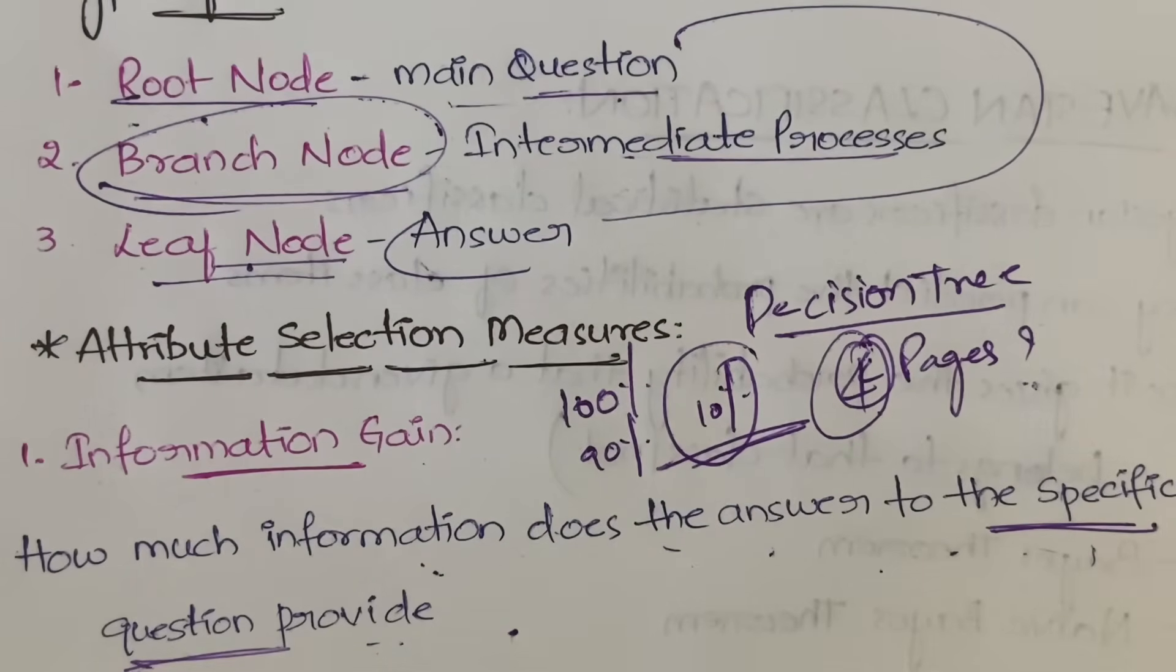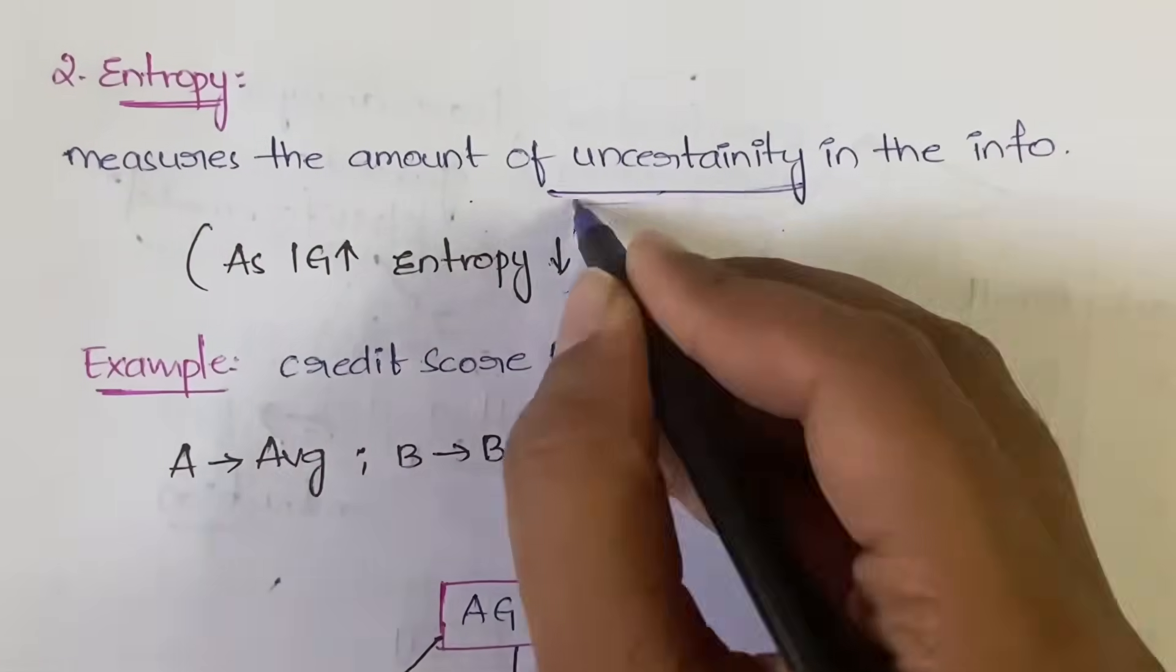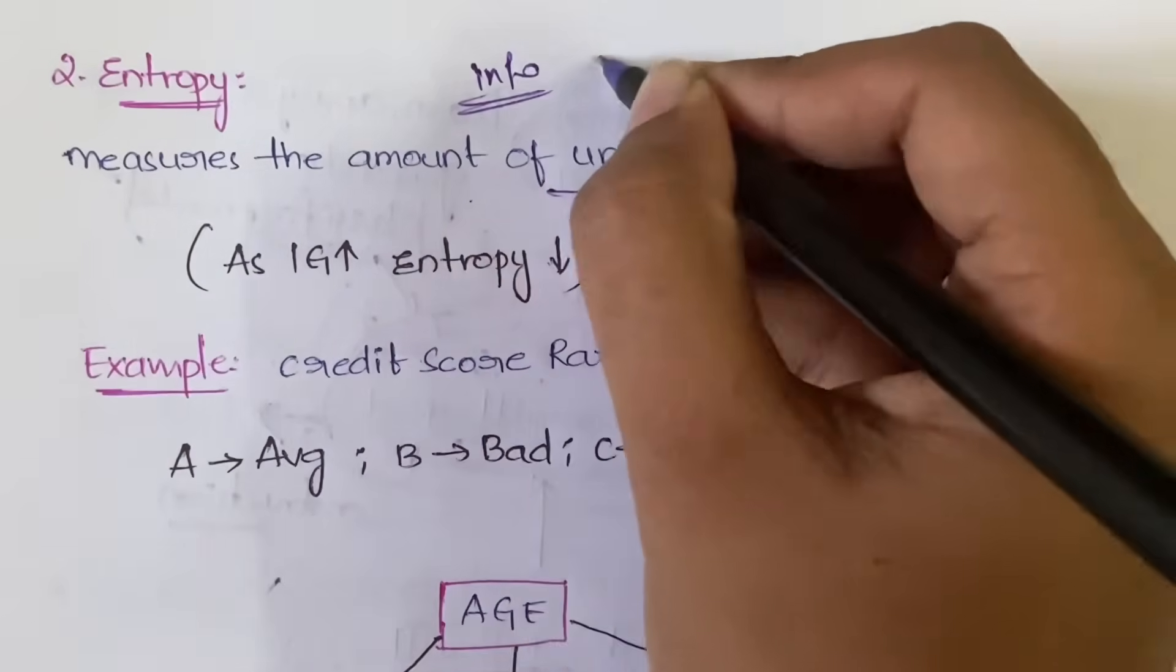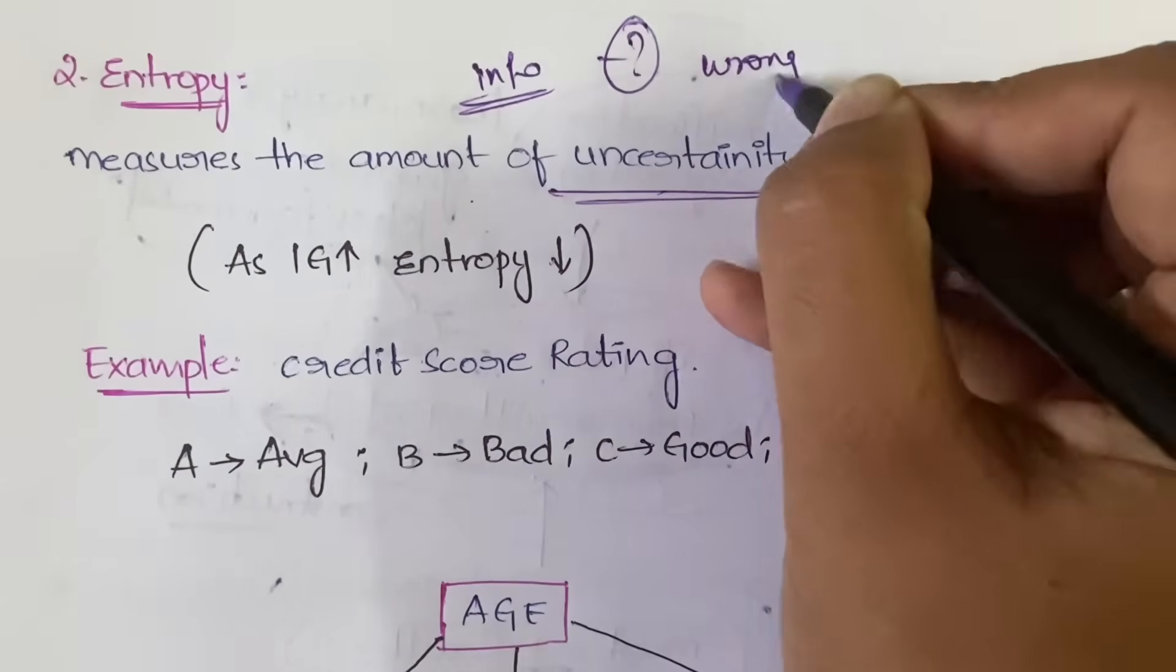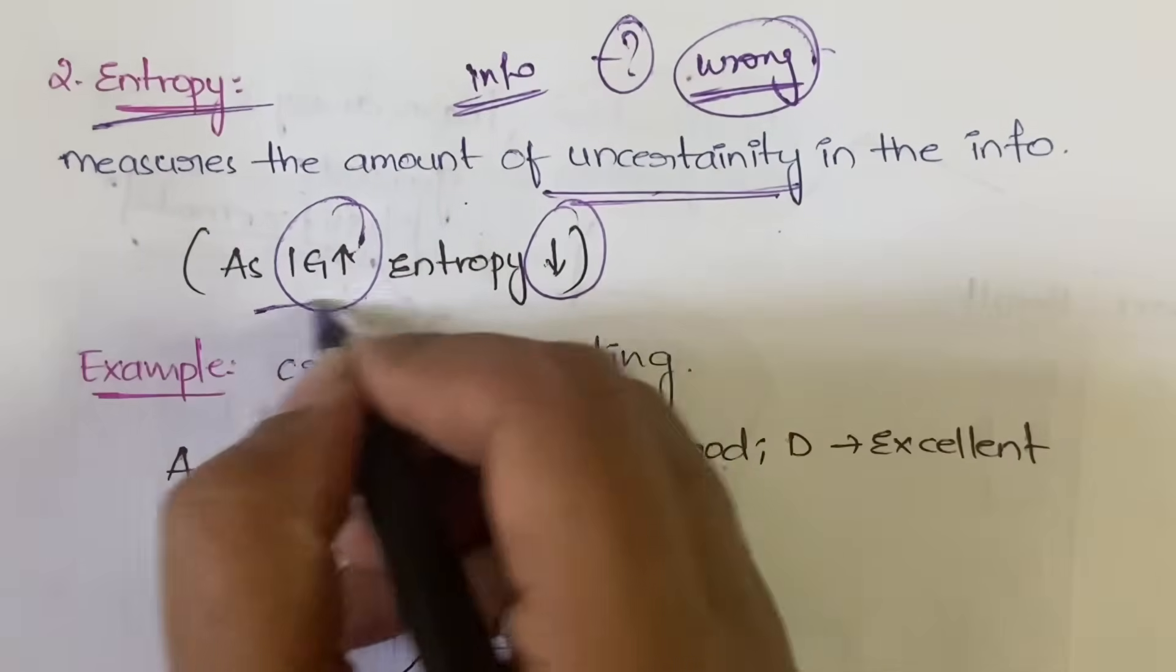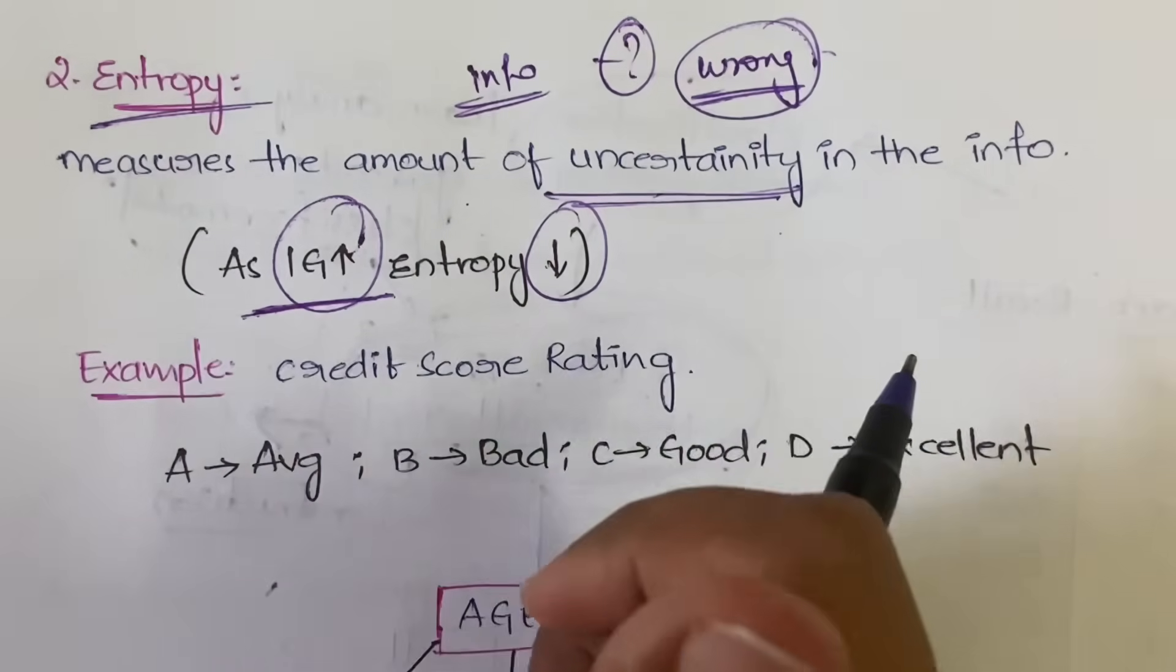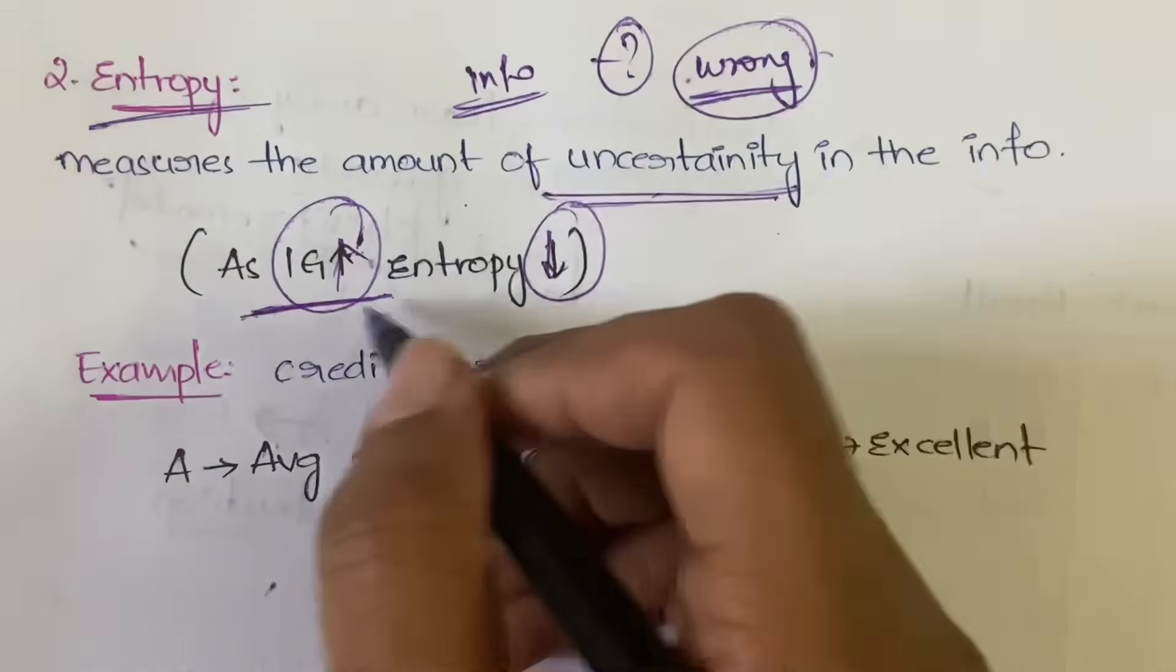The second measure is the entropy. Entropy is the amount of uncertainty in the information. If you are having some information, how much is the uncertainty, the probability that it may go wrong? That is called entropy. As the information gain increases, the entropy will decrease. Information gain is the accuracy of the answer. If it is increasing, obviously the uncertainty will decrease. So they both are inversely proportional to each other.